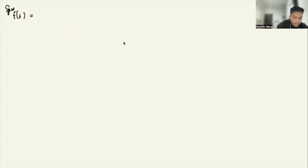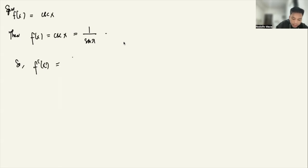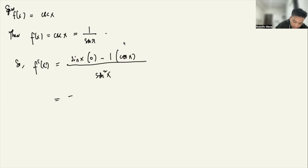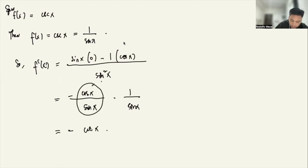Finally, suppose f(x) = cosecant x. That equals 1 over sine x. Taking the derivative: f'(x) = sine x times 0 minus 1 times the derivative of sine x (cosine x), all over sine squared x. This gives negative cosine x over sine squared x, which splits as negative cosine x over sine x times 1 over sine x, giving negative cotangent x times cosecant x.